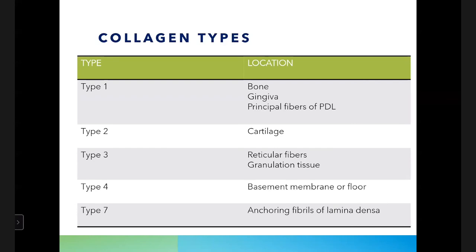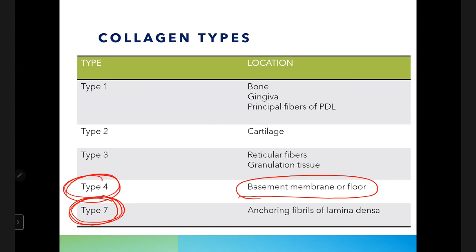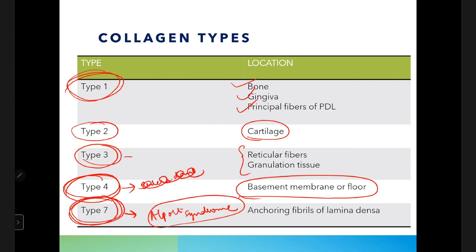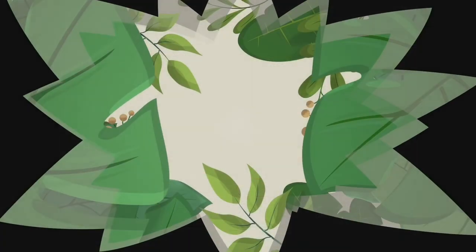Collagen types to remember: type 7 in anchoring fibrils; type 4 in basement membrane; type 3 in reticular fibers; type 2 in cartilage; type 1 in bone, gingiva, and principal fibers of the periodontal ligament. Deficiency of type 7 collagen is associated with Alport syndrome, while deficiency of type 3 collagen is seen in Ehlers-Danlos syndrome type 4.